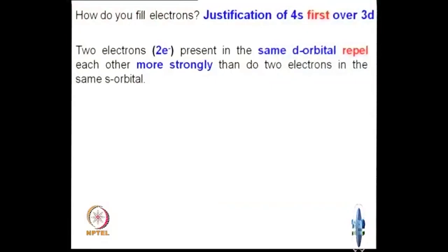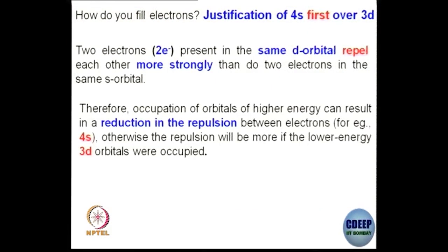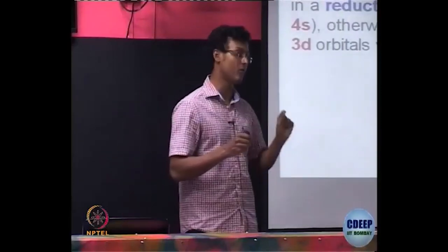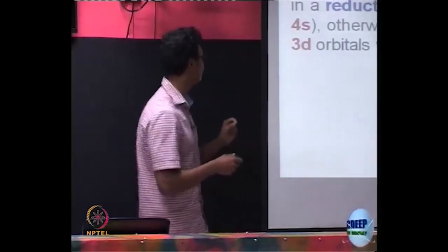4s and 3d first of all have very little difference in energy. Since the repulsion in 4s is going to be much less compared to 3d, what happens is 4s gets preferably filled compared to 3d. So this is an exception, and this is how it can perhaps be explained. Therefore, occupation of orbitals of higher energy can result in a reduction in repulsion. In this case, if you occupy electrons in the 4s orbital, it is going to repel less; consequently, 4s orbital gets filled preferentially over 3d.